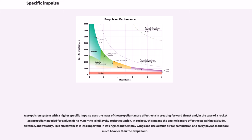A propulsion system with a higher specific impulse uses the mass of the propellant more effectively in creating forward thrust, and in the case of a rocket, less propellant is needed for a given delta-V per the Tsiolkovsky rocket equation. This means the engine is more effective at gaining altitude, distance, and velocity. This effectiveness is less important than for jet engines that employ wings, use outside air for combustion, and carry payloads much heavier than the propellant.